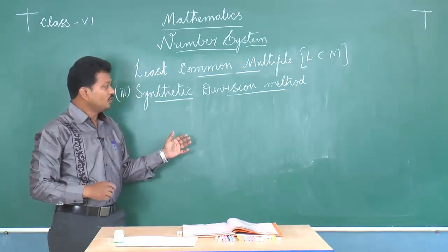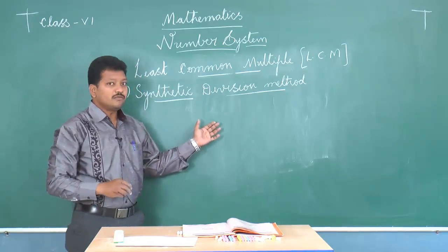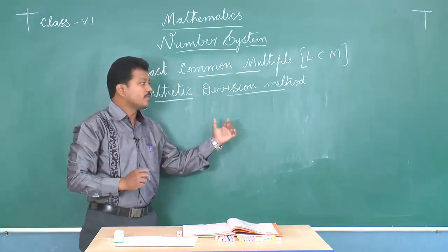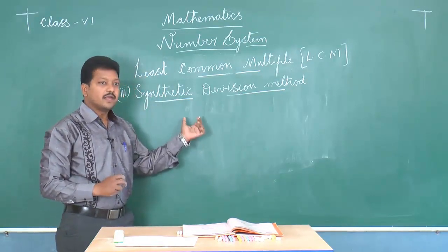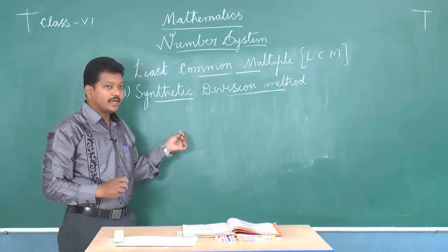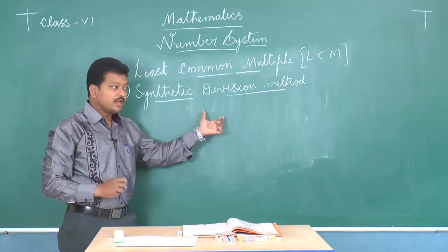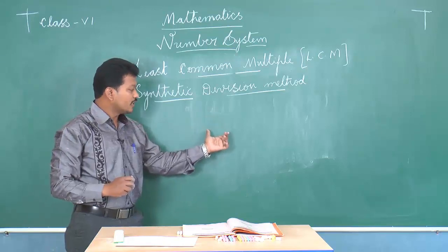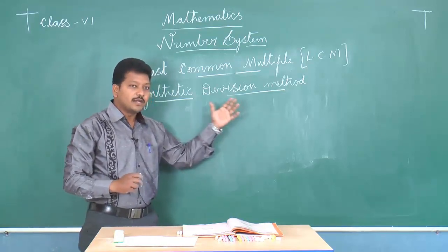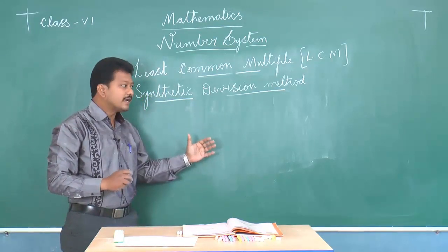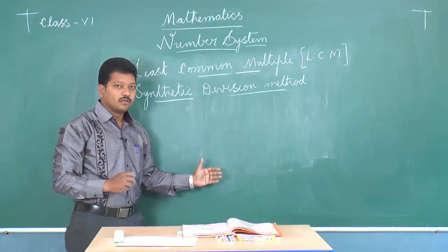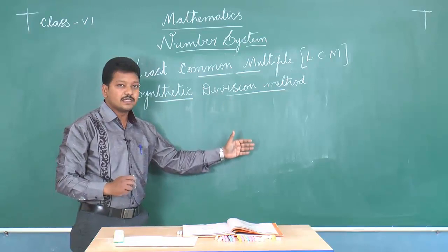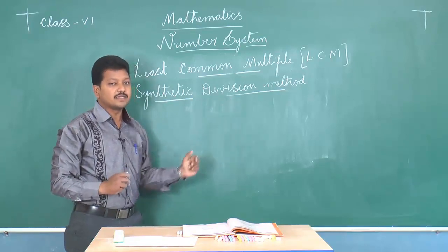Then after that, we have to choose a common factor of at least two or more numbers. We divide the given numbers by that common factor and write the quotient in the next row. We continue this procedure until we get co-primes. Numbers that are not divisible by the chosen factor are written as they are — we carry those numbers down as they are.